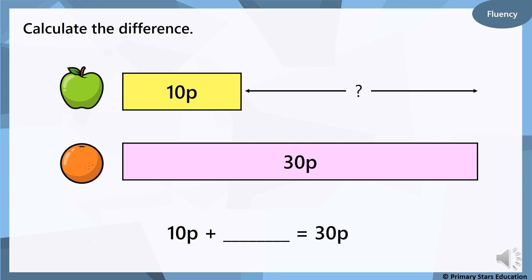We are going to use a bar model to help us. We have got 30 pence here, which is our total, and we have got 10 pence here. So the orange is going to equal how much? You need to find the difference between 30 pence and 10 pence. If you start at 10 and count up in tens to 30: 20, 30 — that's 20p. So 10p plus 20p equals 30p, and that part of the bar would be 20p.